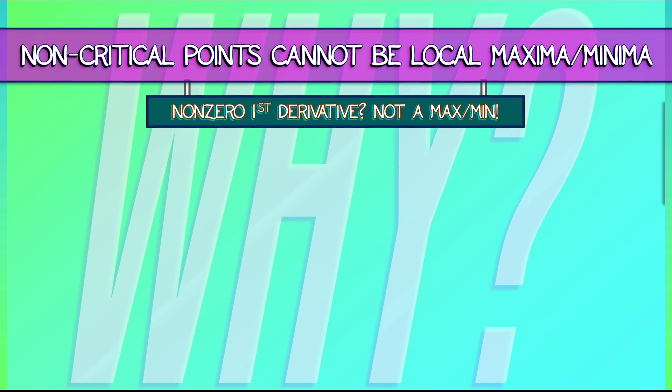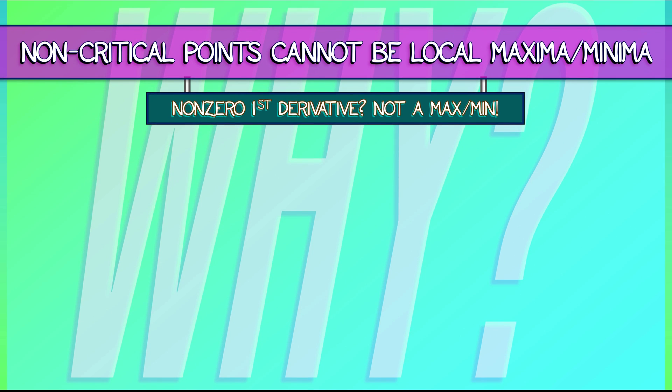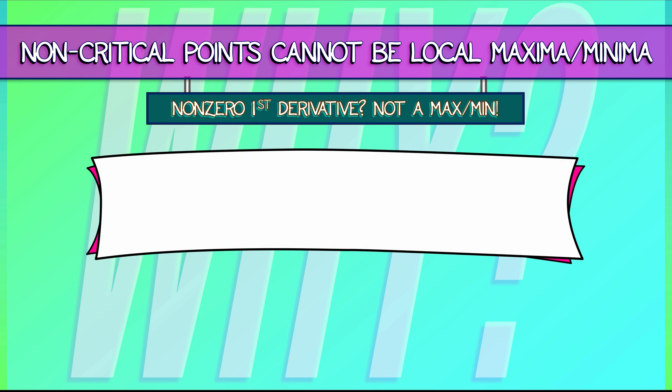Now, why is this true? There are a number of ways that you can see this. Let's look at it from the perspective that we have been developing, from the perspective of Taylor expansion. If we've got a function f and a point A at which we think there might be a local max or min, if we perturb away from it, if we look at f of A plus H, then what is this?